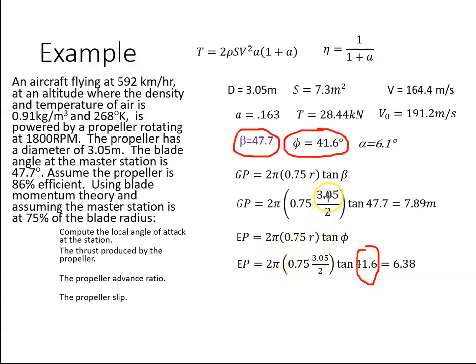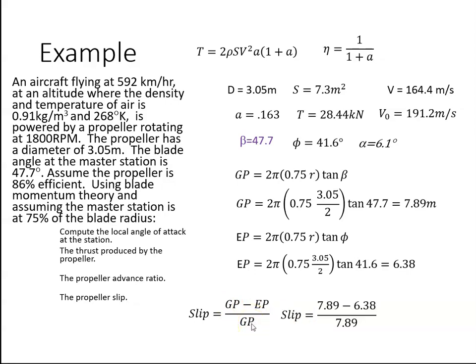The diameter is 3.05, so the radius is 3.05 over 2 at the master station. We have a geometric pitch of 7.89 metres and an effective pitch of 6.38 metres. Then the slip is geometric pitch minus effective pitch divided by geometric pitch. Put those values in, and that works out to be 19 percent.